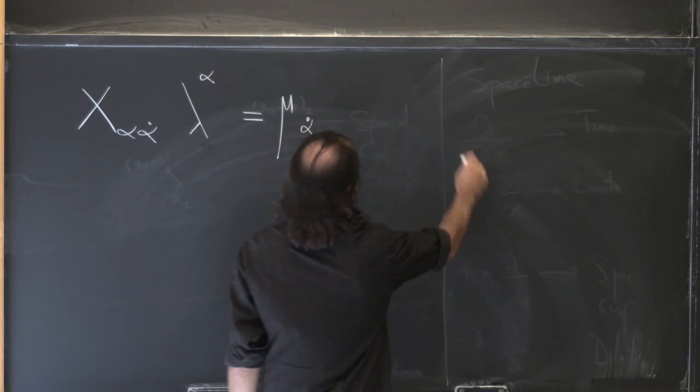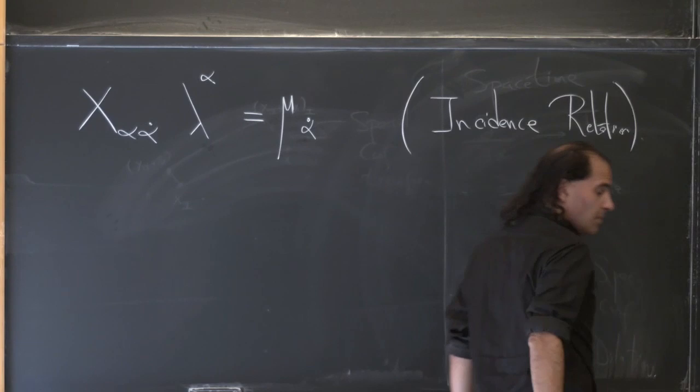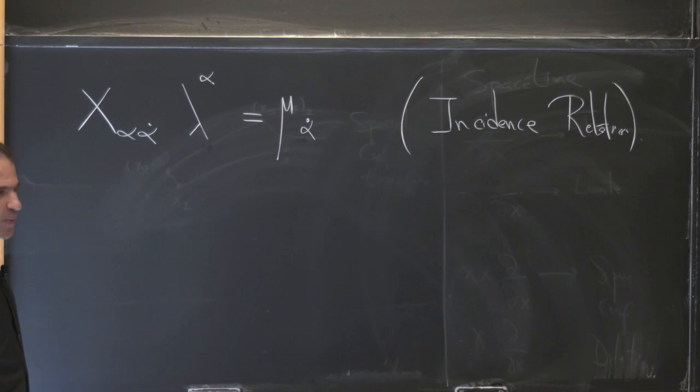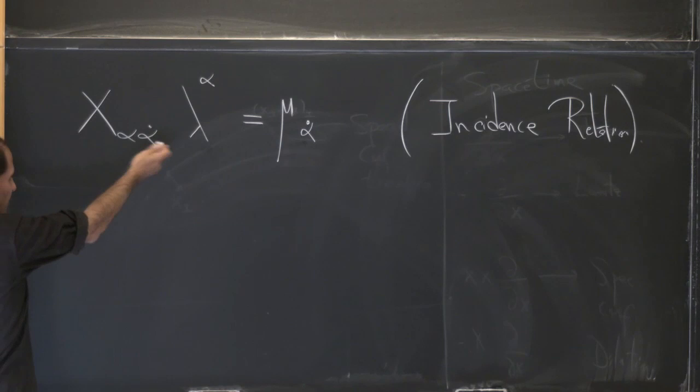This is called the incidence relation. All these things go back to Penrose, of course. Without further ado, we can see what is a nice way of characterizing a null ray. A nice way is just giving me a lambda and a mu. If you give me a lambda and a mu, I have a null ray — this is how I find the null ray, all the points that satisfy these equations.